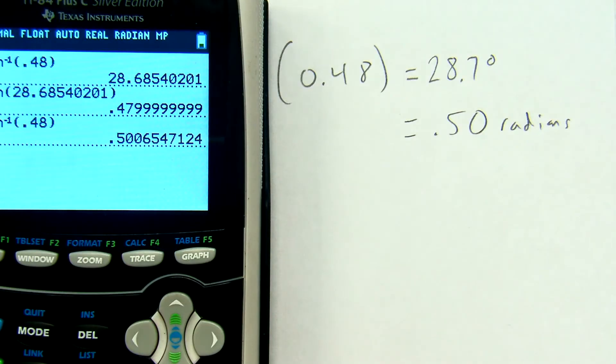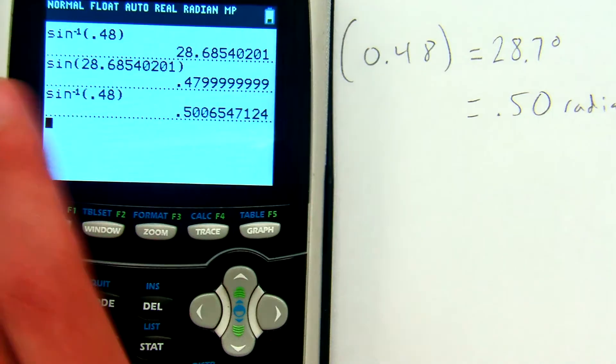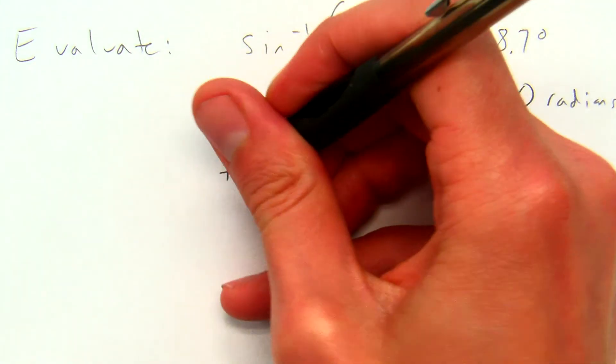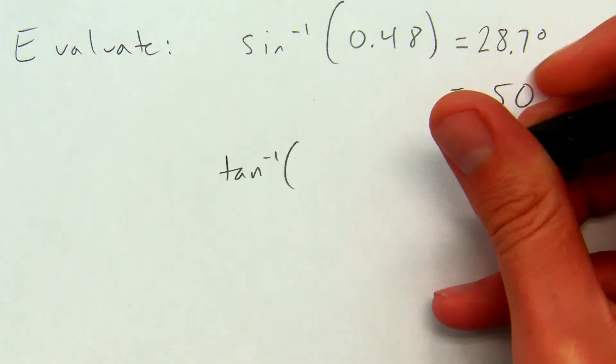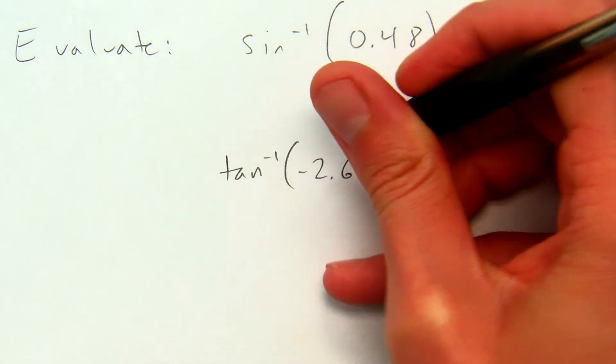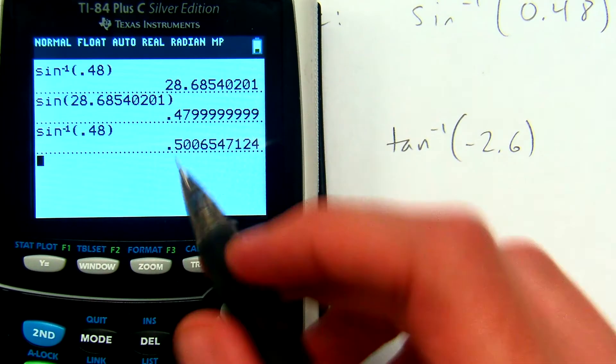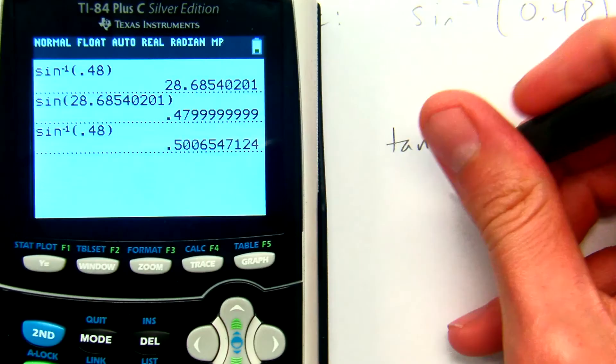Pretty easy. Let's try one more. Let's evaluate inverse tangent of, I don't know, negative 2.6. Inverse tangent of negative 2.6. I'm going to give my answer in both radians and degrees. I'm already in radians, so I'll start with radians.